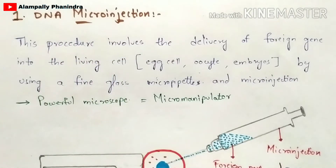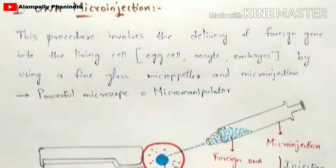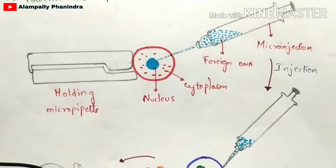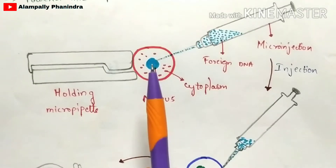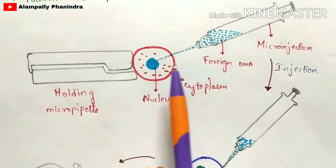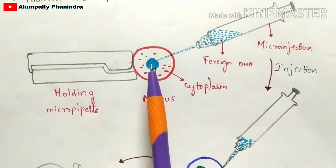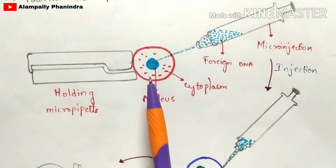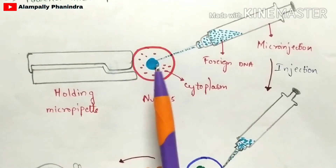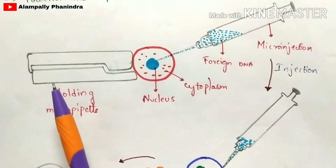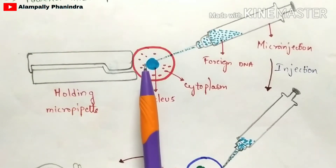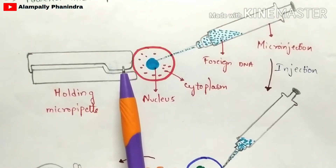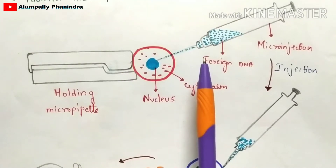To perform this technique, you first select an appropriate cell with a nucleus. The nucleus contains the genetic material, as we know, and the cell also consists of cytoplasm. You hold this nucleus with the help of a holding micro pipette.